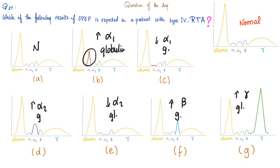Before we answer the question: increased gamma globulin can be seen in multiple myeloma or Waldenström macroglobulinemia. In multiple myeloma, this is made of IgG. In Waldenström macroglobulinemia, this is made of IgM.